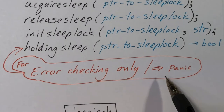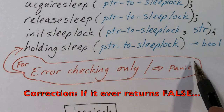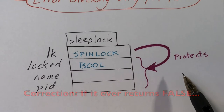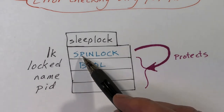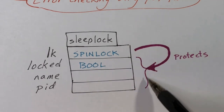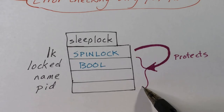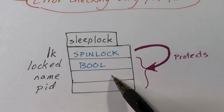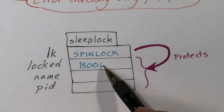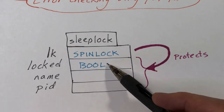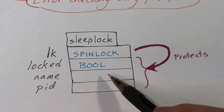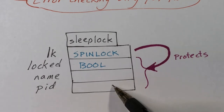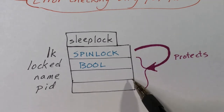The holding_sleep function is used for error checking — if it ever returns true when it shouldn't, the kernel immediately panics. The sleep lock structure contains four fields. The first field is a spin lock, used to protect the remaining fields. The name is initialized and never changed. The key field is a boolean called locked: if true, the sleep lock is being held, and the PID field will contain the process ID of the process holding the lock. If false, the lock is free and unheld.